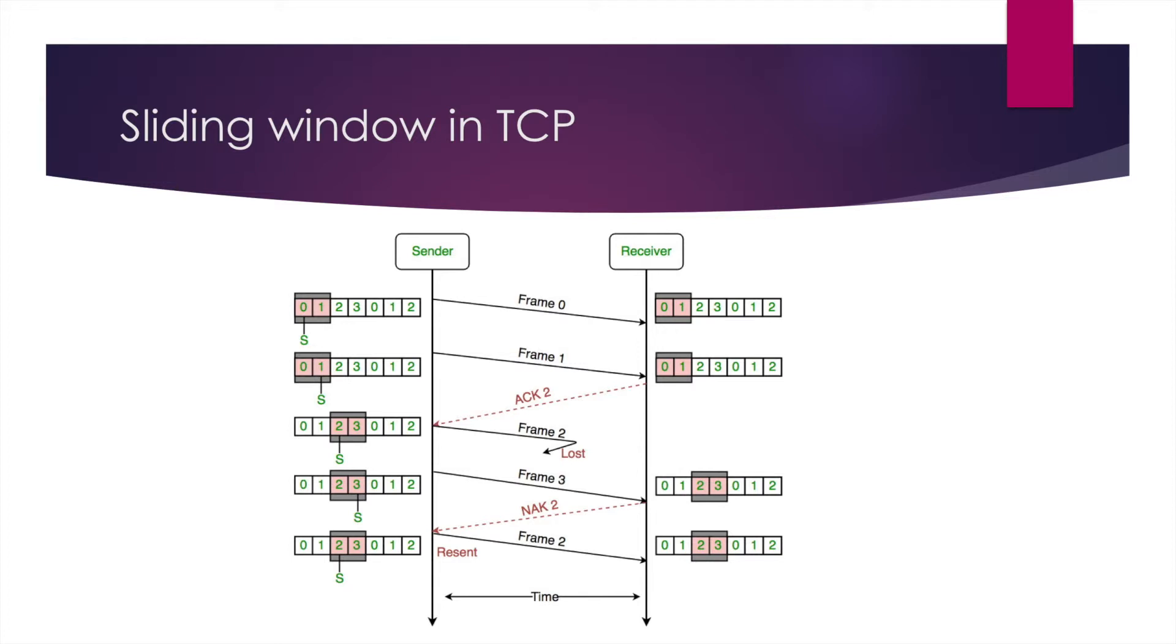Another method is sliding window, shown in the picture. The sender will not wait for the receiver's response but send frame 0, frame 1 sequentially. Then the receiver gives an ACK to confirm that frame 0 and frame 1 are received. Then the sender sends another frame. In this way, the frames are sent in parallel to the receiver. So using this sliding window can increase the efficiency of sending traffic.